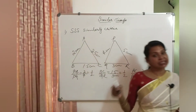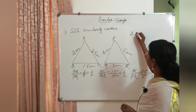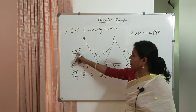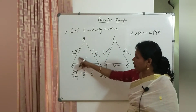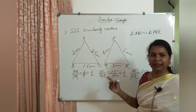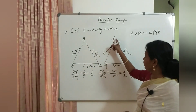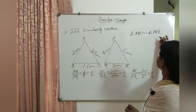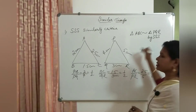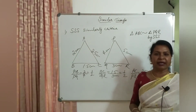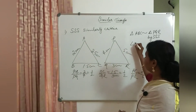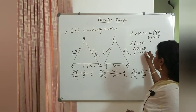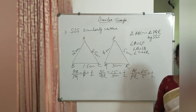We write: triangle ABC is similar to triangle PQR by SSS similarity criteria. Since the triangles are similar, we can equate corresponding angles: angle A equals angle P, angle B equals angle Q, and angle C equals angle R. The reason is: corresponding angles of similar triangles are equal.